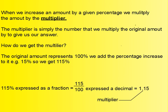Let's go deeper. When we increase an amount by a given percentage, we multiply the amount by the multiplier. The multiplier is simply the number that we multiply the original amount by to give us our answer. You may wonder how do we get this multiplier — how do we come by it?